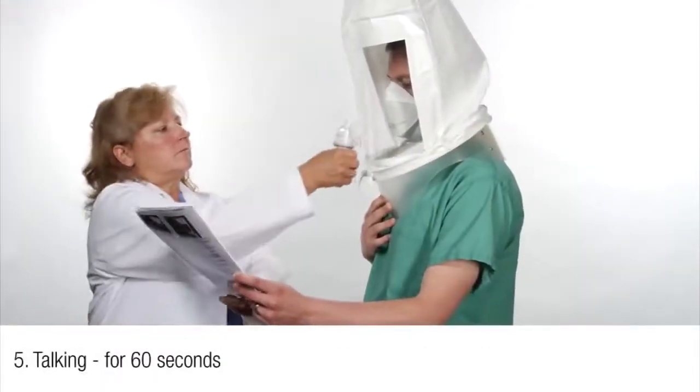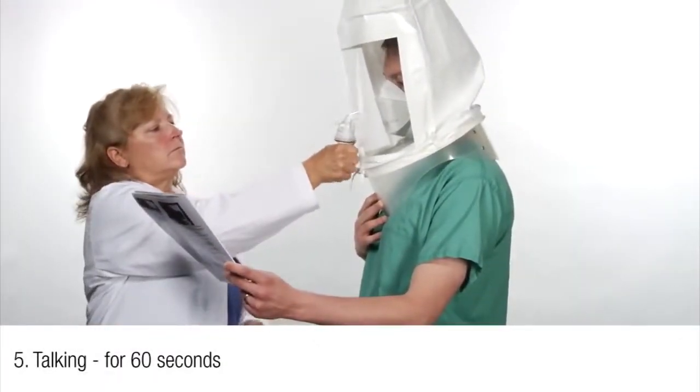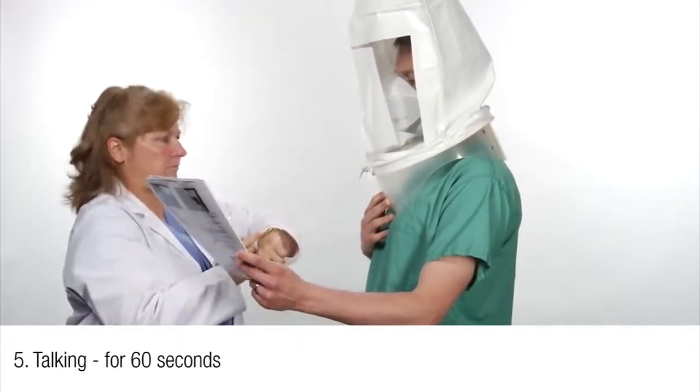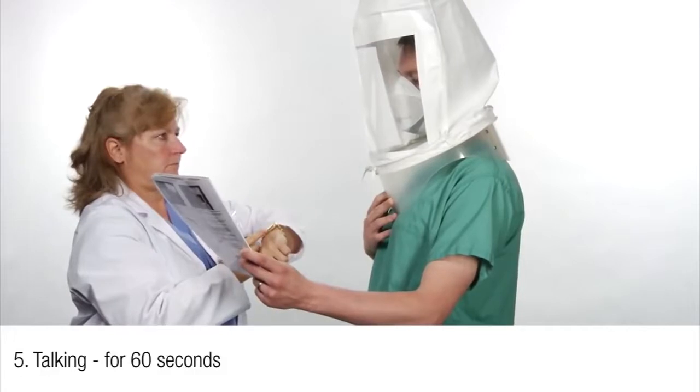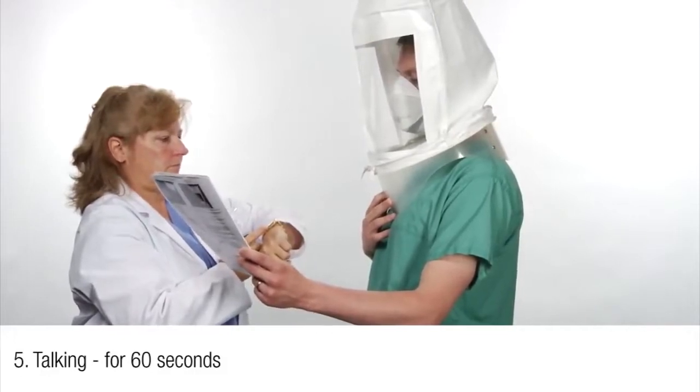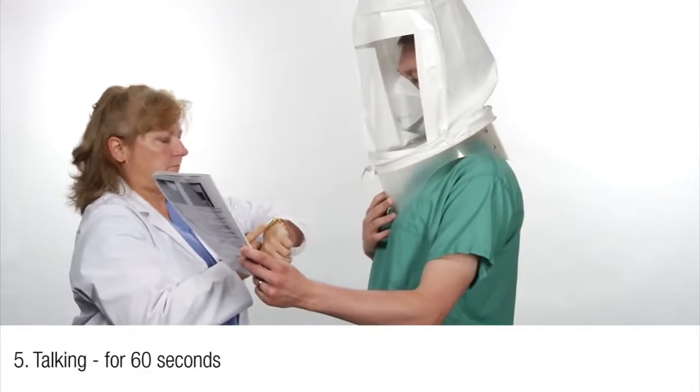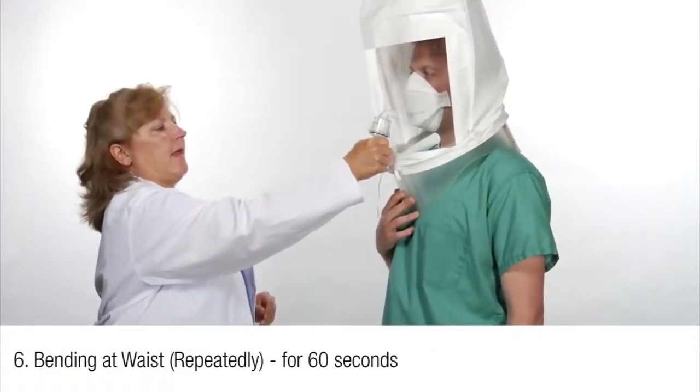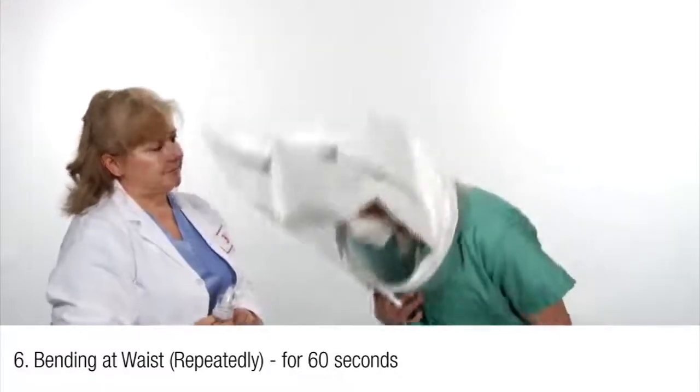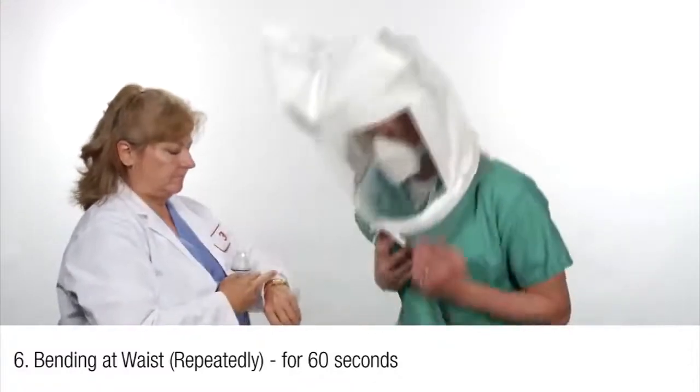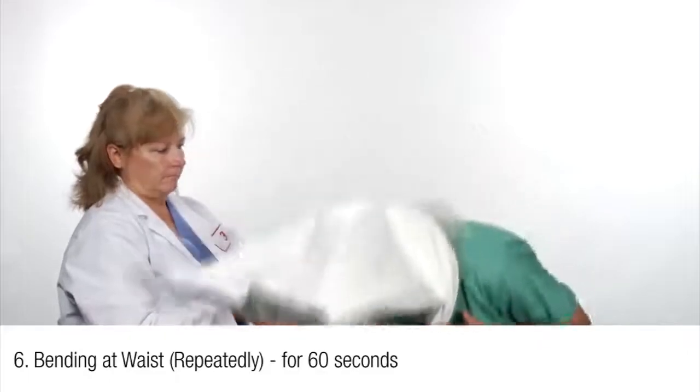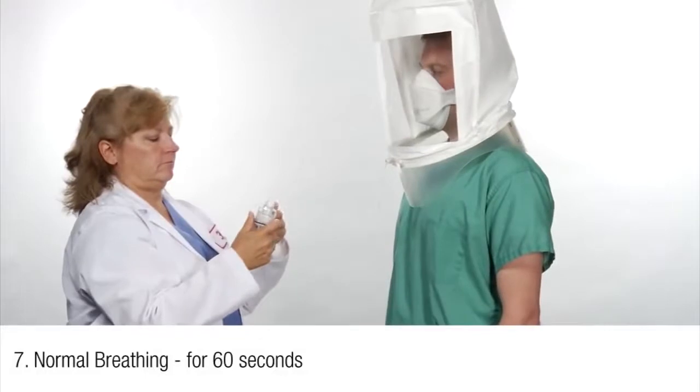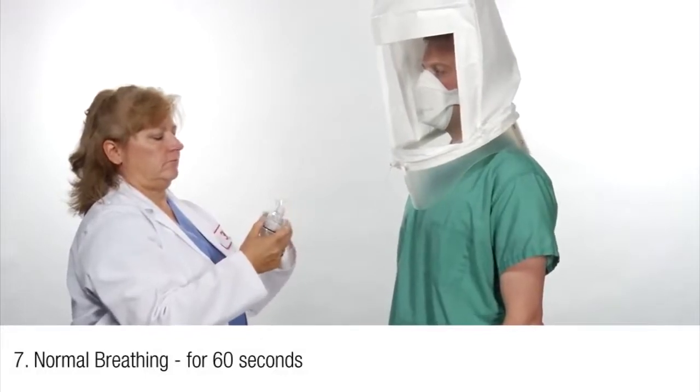Fifth, the subject shall talk out loud slowly and loud enough so as to be heard clearly by the test conductor for 60 seconds. A reading called the rainbow passage is included in the print instructions for the 3M qualitative fit test. Sixth, have the subject bend over at the waist as if he or she were to touch their toes for 60 seconds. Jogging in place may be substituted for this exercise. Conclude by asking the subject to breathe through their mouth normally again for 60 seconds.